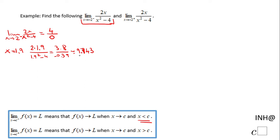Be careful because the denominator is negative. Now I'm going to go even closer to 2. At 1.99, I'm going to have 2 times 1.99 over 1.99 squared minus 4, and that'll be 3.98 over negative 0.0399.